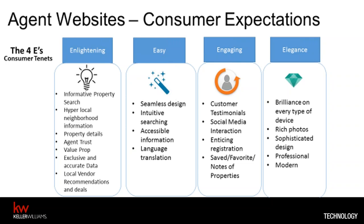The fourth E is Elegance. They want it to look great on every type of device, with rich photos. As you're looking at photos you're taking of current listings, are you putting the best photos possible in the MLS so they go out on all the different sites looking beautiful? They want a sophisticated, professional, modern design — this is a very big transaction they're doing. So that's what consumers are looking for in your website.